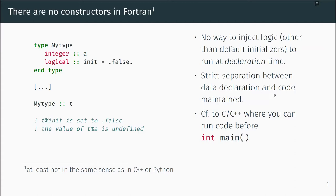There is no possibility in the standard to run actual code before your main program starts. In C++ you can register code to run before int main is called, and this caused some trouble — fixed in C++11 or 14 — related to initialization ordering across object files. Fortran decided, I think rightly, not to allow this, and I think this is probably the reason why you can't really have a constructor in the same sense.